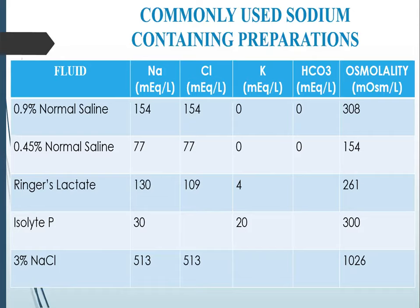Isolyte P has 30 milliequivalents per litre of sodium and 20 milliequivalents per litre of potassium, with an osmolality of 300 milliosmol per litre. 3% NaCl has 513 milliequivalents per litre each of sodium as well as chloride, and the osmolality is 1026 milliosmol per litre. As is evident from this slide, 0.9% normal saline, Ringer's lactate, and Isolyte P are isotonic preparations.